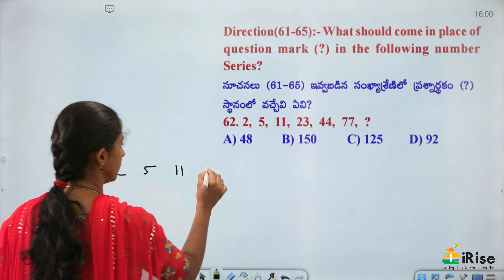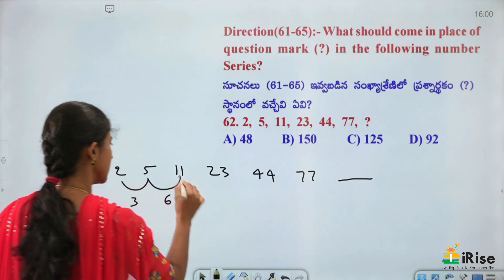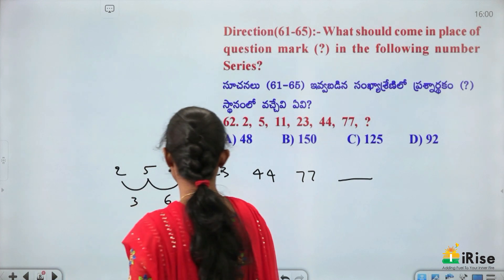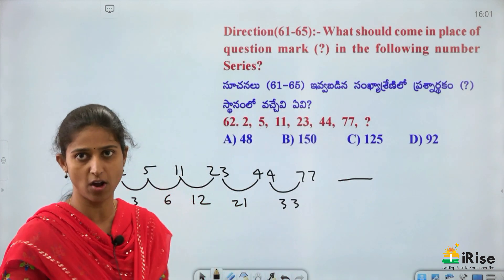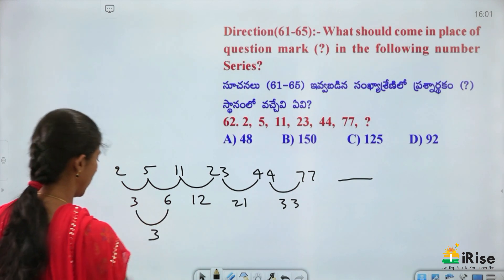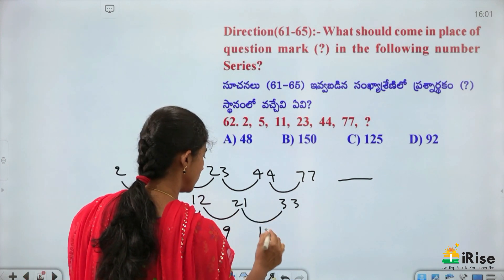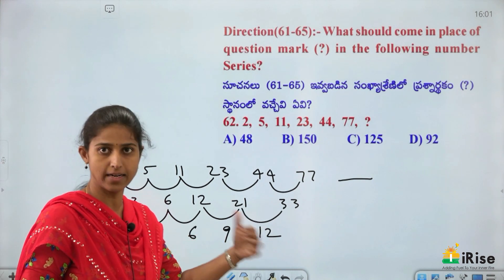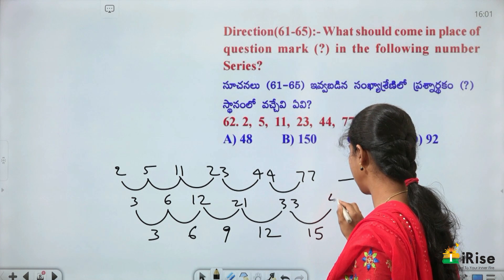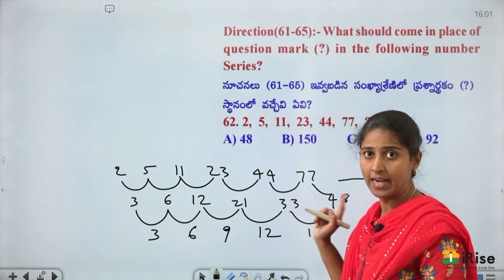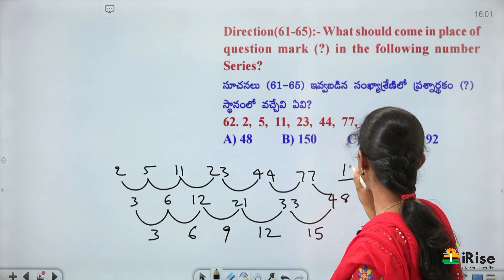Series: 2, 5, 11, 23, 44, 77 — what is the next number? The differences are 3, 6, 9, 12... but these don't follow exactly. Writing the differences of differences: 3, 6, 9, 12 — multiples of 3. Next difference should be 15, then next is 33 + 15 = 48. So 77 + 48 = 125 is the answer.